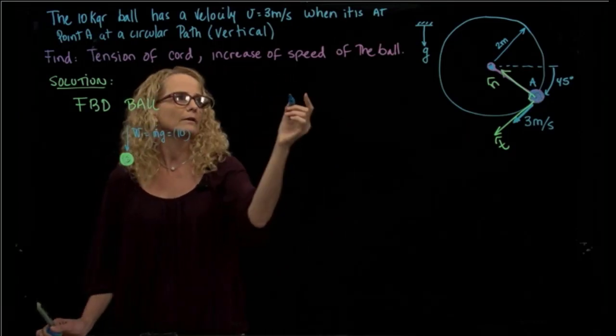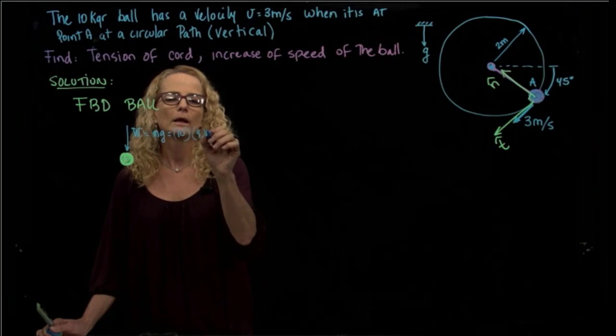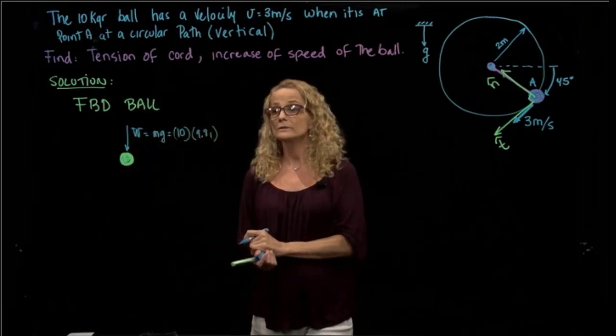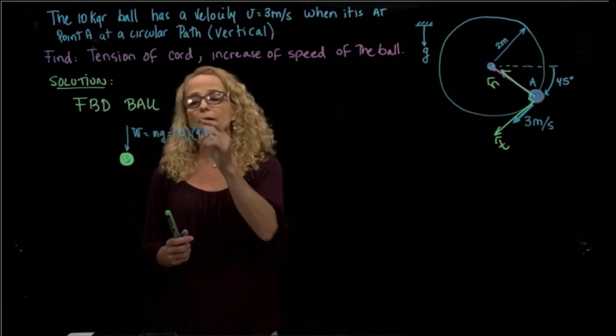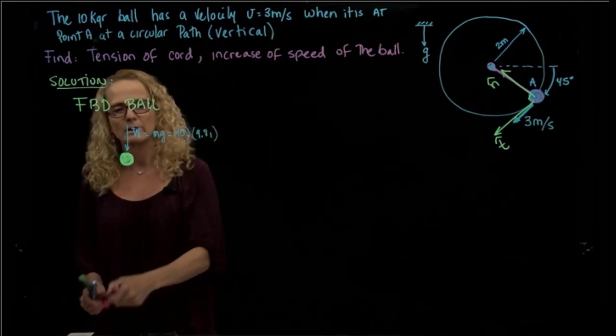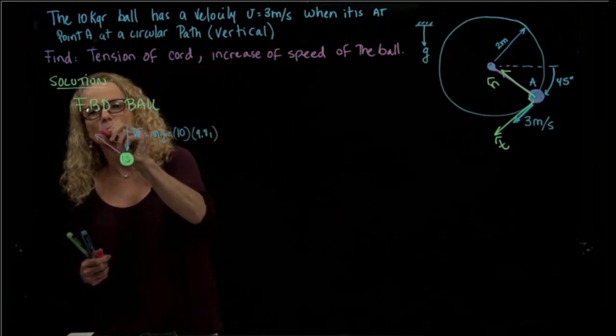And we know that the gravity is 9.81 in international units. And then we have our tension. I'm going to draw it in another color. So we have the tension of the cord.